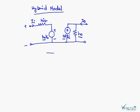Now the model shows that this is the voltage source, and the magnitude of this voltage source is HRV0. And this is the current source. Magnitude is given by HFIN.